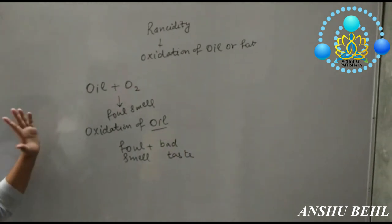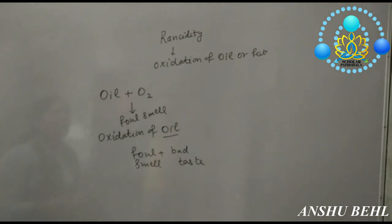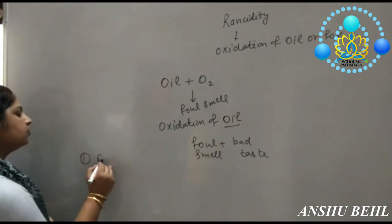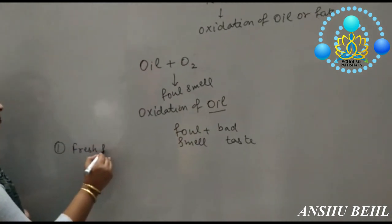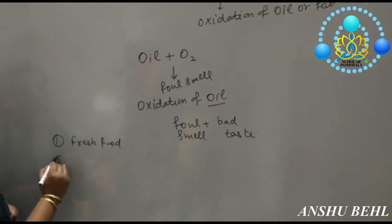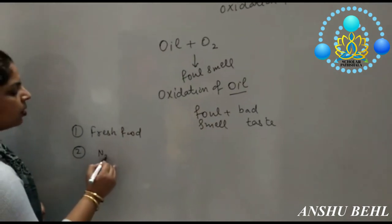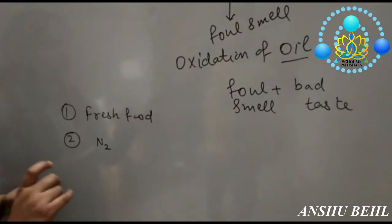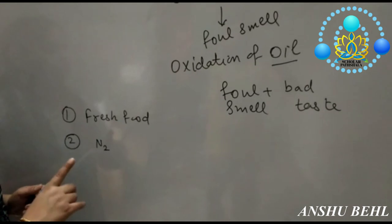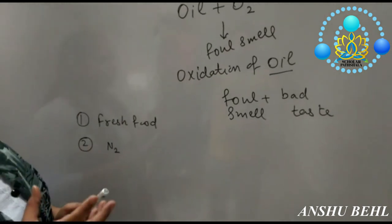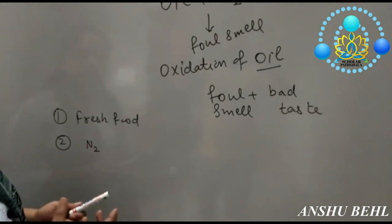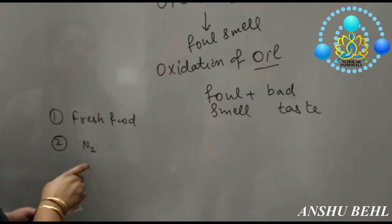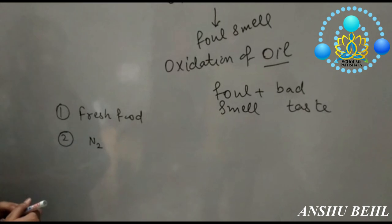How it can be prevented? It can be prevented by making fresh food. Or it can be prevented by packing the packets with nitrogen. Like your chips, packets are flushed with nitrogen. So that nitrogen is making a layer around the chips. And it don't let oxygen to get enter in and oxidize your food items.